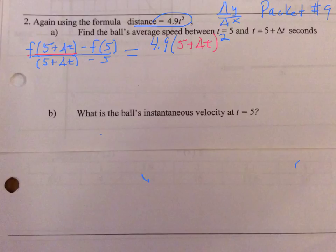Now, f of 5, that one's a little bit easier. F of 5 means I just need to put in 4.9 times 5 squared, and that's all going to be divided by f of 5 plus delta t minus 5, so all of that is just delta t.